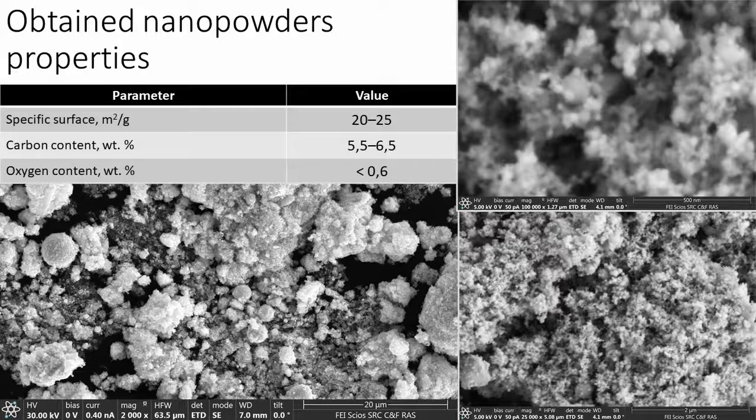As a result of experimental research, nanopowders with a specific surface area of 20 to 25 square meters per gram were produced. Mean particle size of obtained nanopowders was about 50 nanometers. Overall carbon content in obtained nanopowders was in range from 5.5 to 6.5 weight percent. Oxygen content on obtained nanopowders was no more than 1 weight percent.